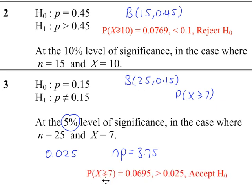P(x ≥ 7) is 1 minus P(x ≤ 6), which gives 0.0695. This probability is greater than 0.025, so we accept H0.